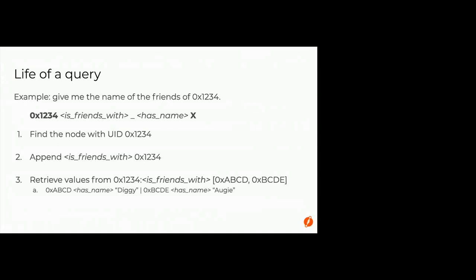How do we add predicates to UIDs? It's just concatenation — you put them together with a separator. The predicate name, like 'is friends with', is known from the query. So '0x1234 is friends with' is the key; if it exists we get the value, if not it means I'm not friends with anyone. Multiple values for the same predicate — like having multiple friends — are stored as a posting list: one key with a list of all related UIDs as the value.